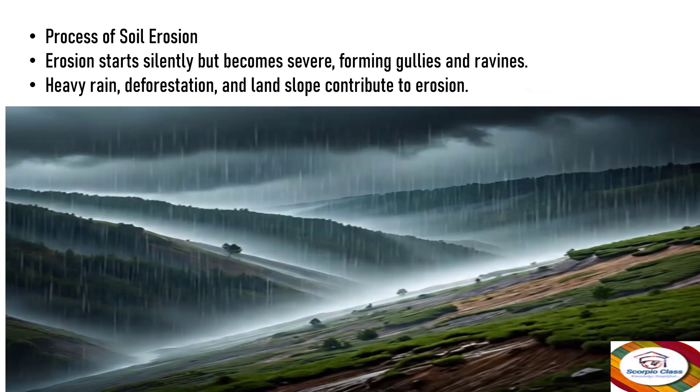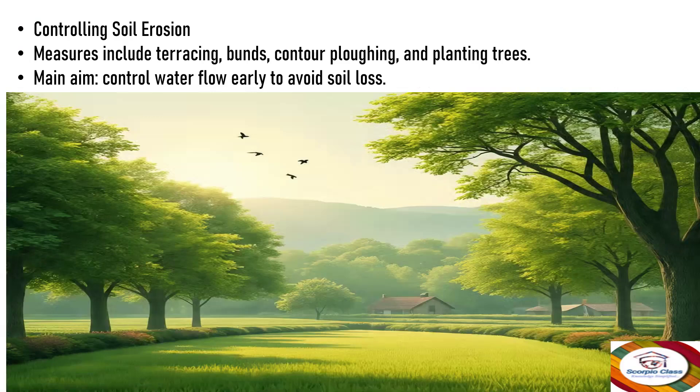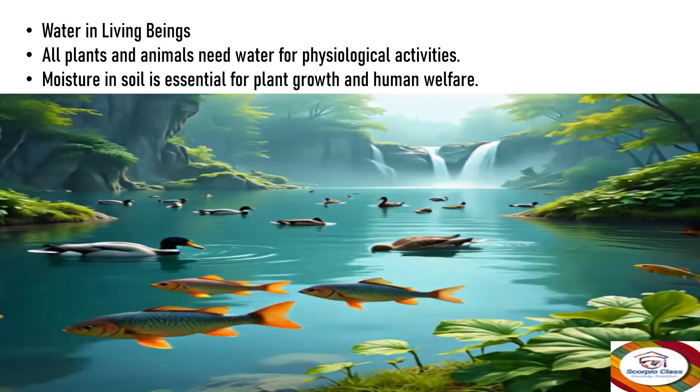To control soil erosion, measures include terracing, bunds, contour ploughing, and planting more trees. The main aim is to control water flow early to avoid soil loss. When more plants are grown, soil erosion is controlled. When the land is firm, the soil will not get washed away easily by water flow.